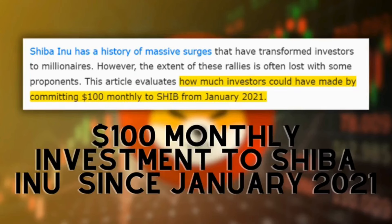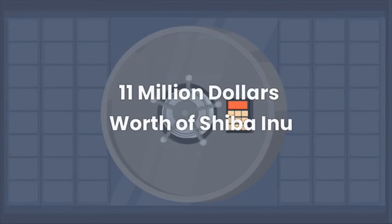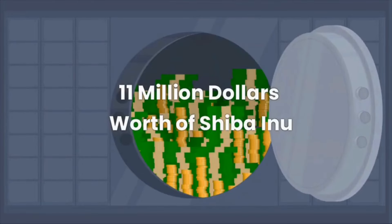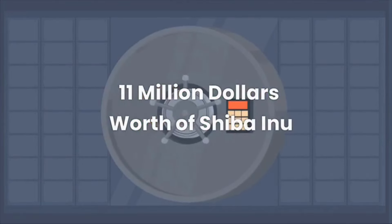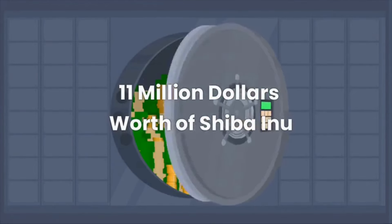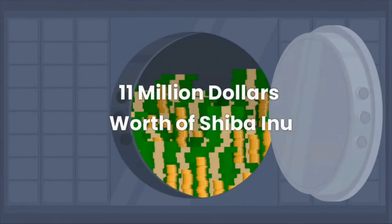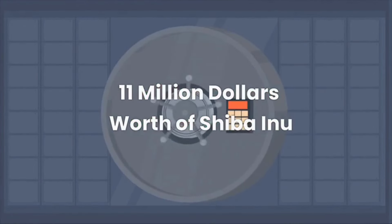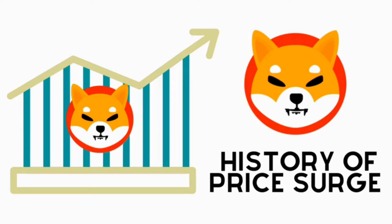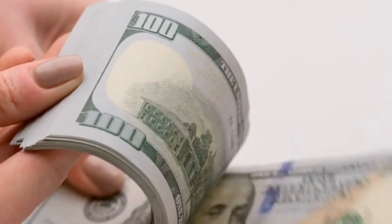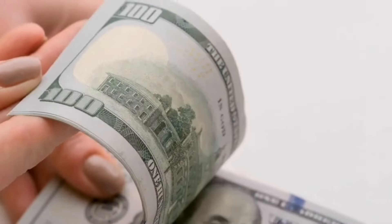Let me introduce you to the story of a savvy investor who foresaw the potential of Shiba Inu early on. This individual committed $100 monthly to Shiba Inu since January 2021, adopting a dollar-cost averaging approach. Fast forward to the present, and this investor now finds themselves sitting on an impressive $11 million worth of Shiba Inu tokens. This came from an investment of less than $4,000.